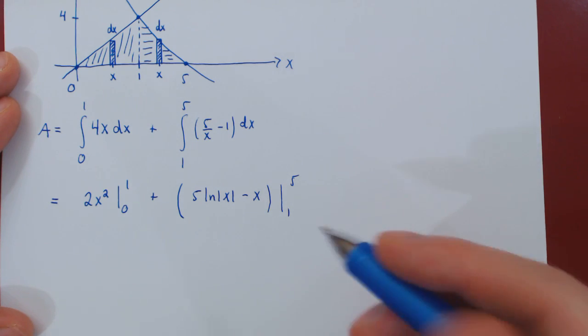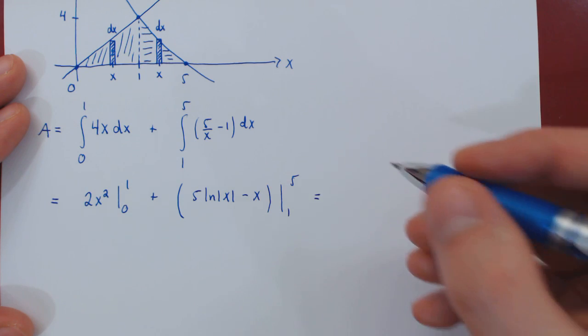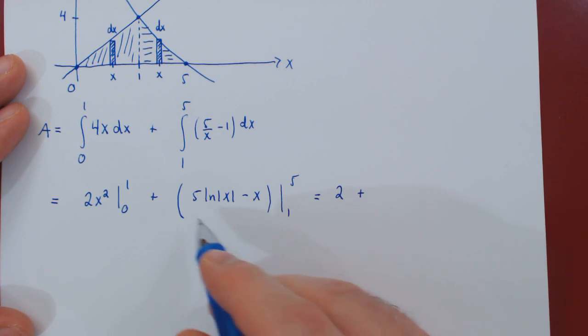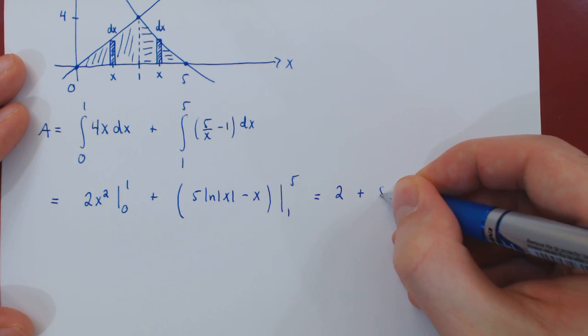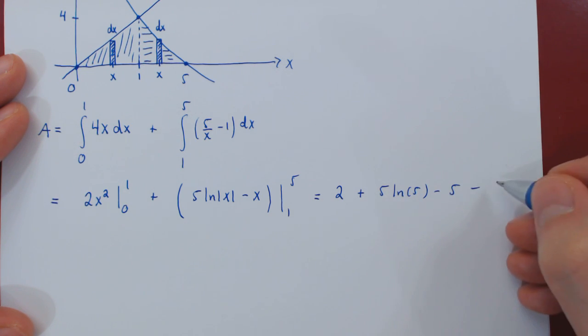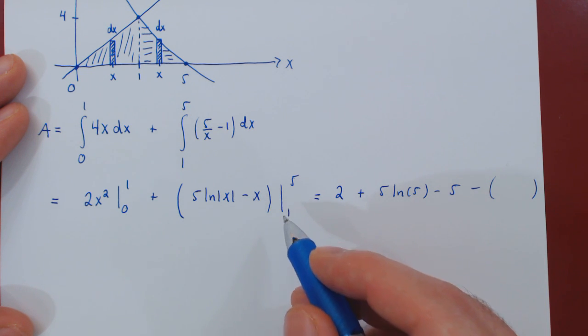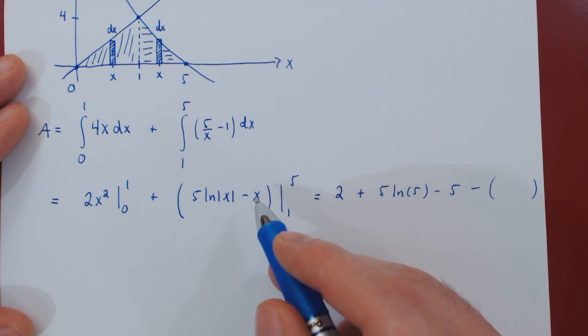Let's plug it in. In the first case, we get 2x squared when x is 1, so simply 2, minus 2x squared when x is 0, 0. Plus the second expression. This function of x when x is 5, so 5 ln of 5 minus 5, minus the antiderivative when x is 1. So 5 ln of 1, but ln of 1 is 0, so this term goes away, and we're left with minus 1.